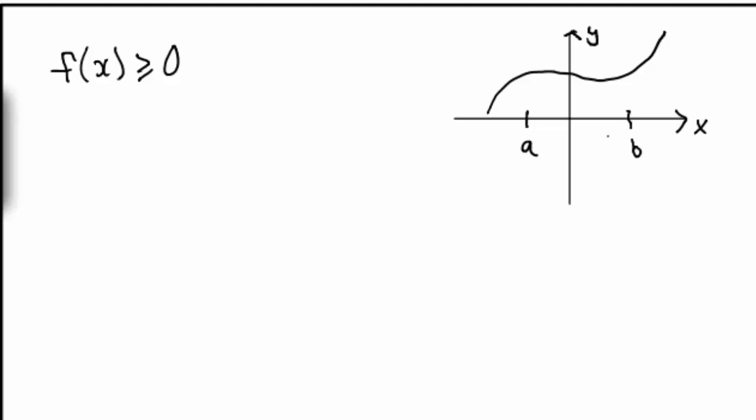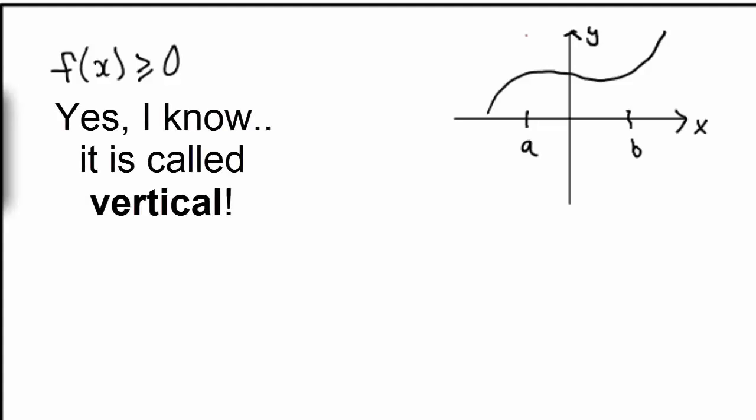That is, the function must be defined for all the x's in between a and b, like it is in this diagram. So what we can do now is we can draw a horizontal line going through the point a,